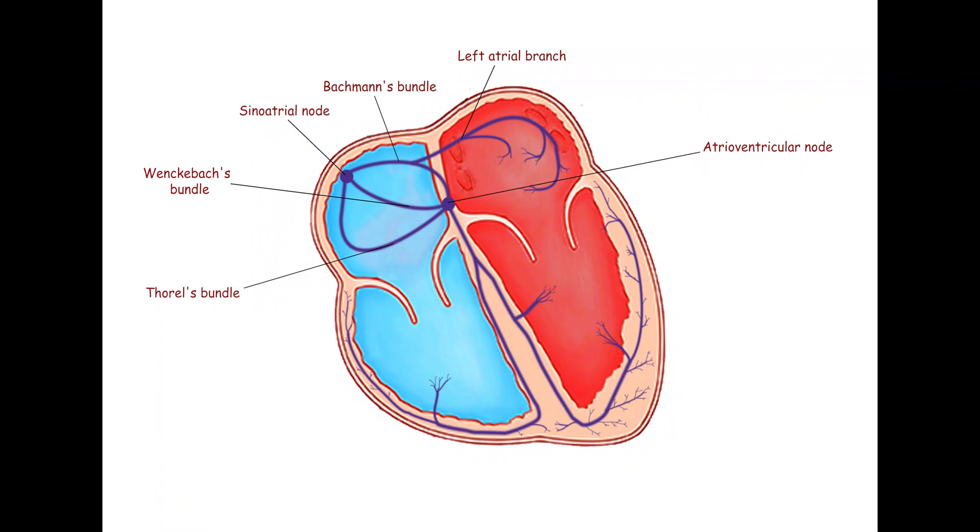From there, the impulse travels through the bundle of His, which divides into two branches: the right bundle branch and the left bundle branch.